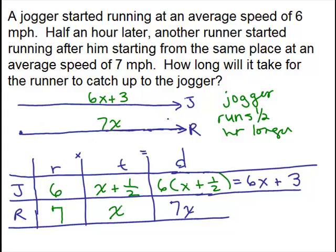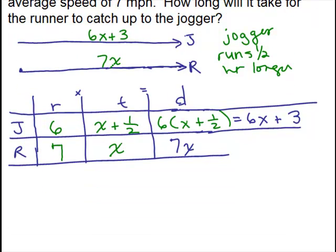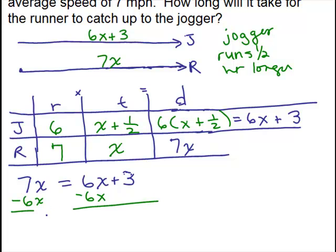Now we want to look at the picture. The picture is always what helps us write the equation. From the picture, look at their distances. Can you see how to relate them? They're both the same distance. So the jogger's distance is the same as the runner's distance. So we have 7x. That's the runner's distance. That line segment is the same thing as the 6x plus 3. And so now we have this equation to solve. Subtract 6x from both sides. And that tells us x is 3.